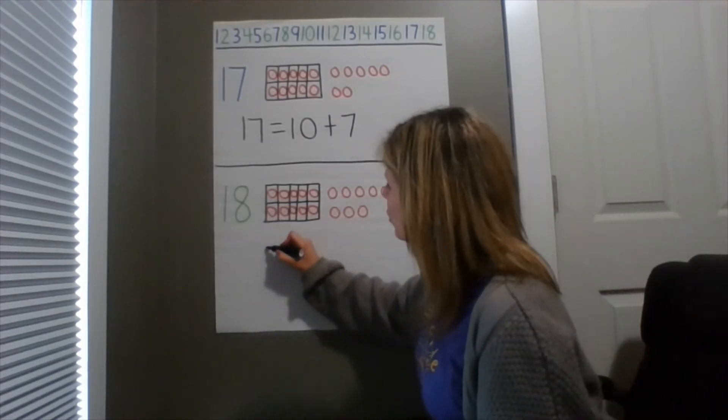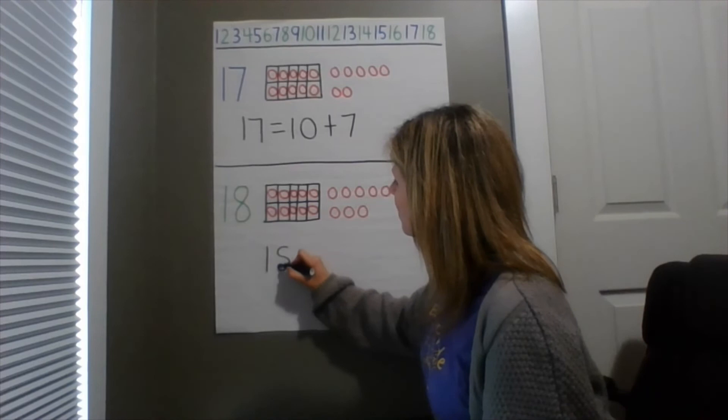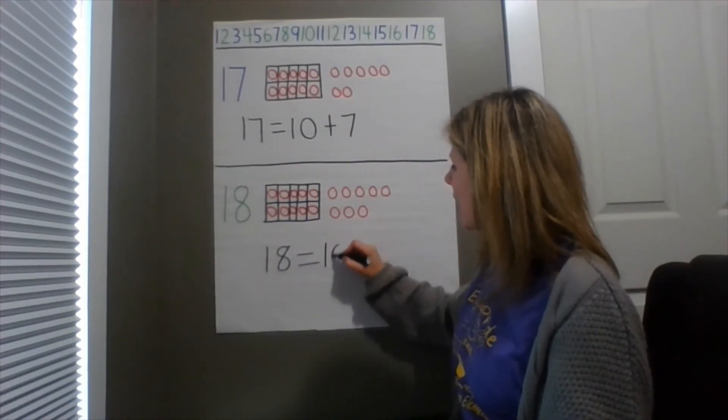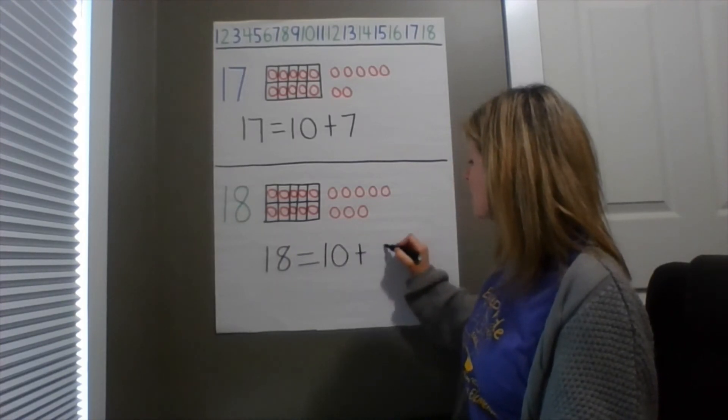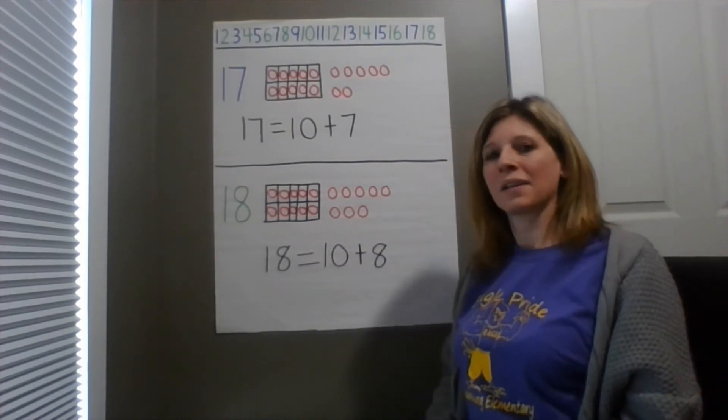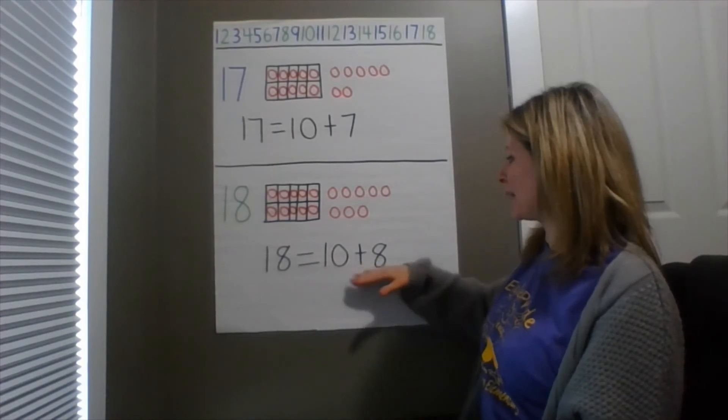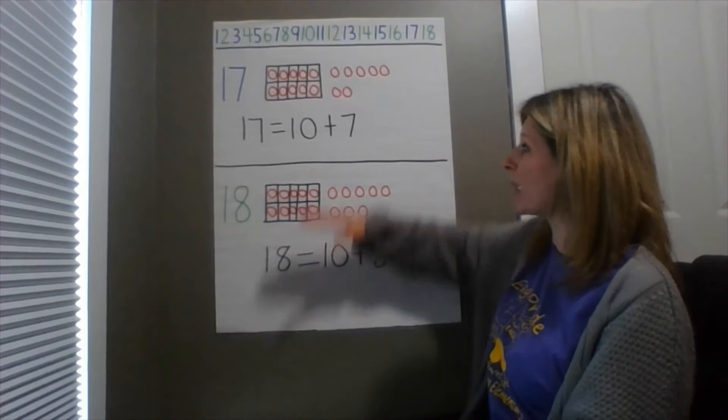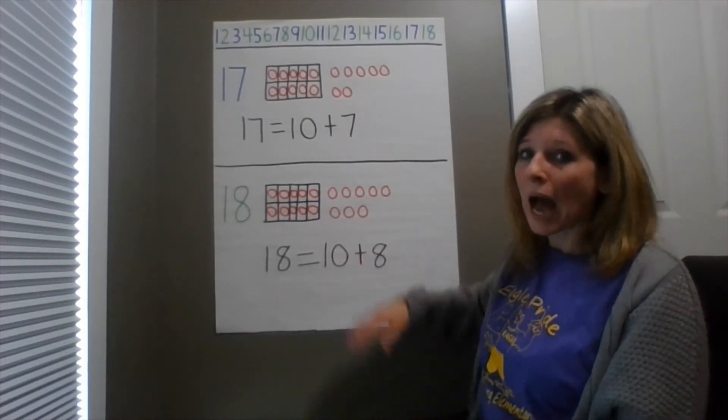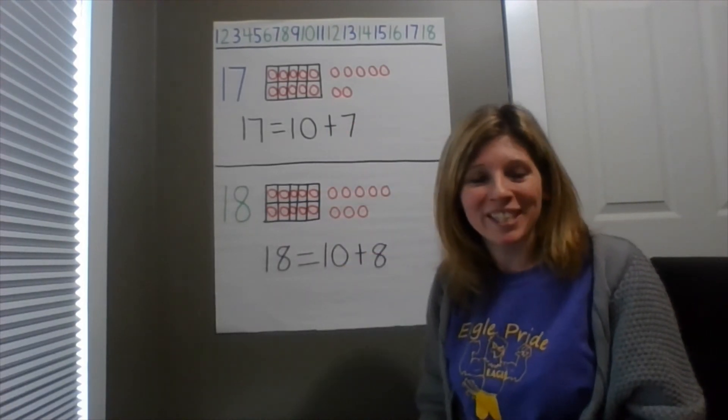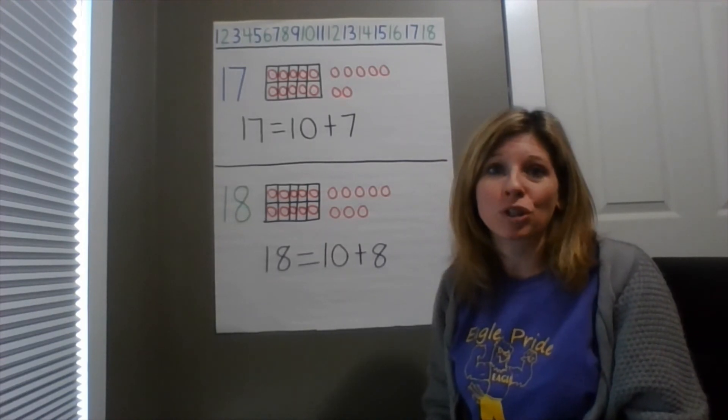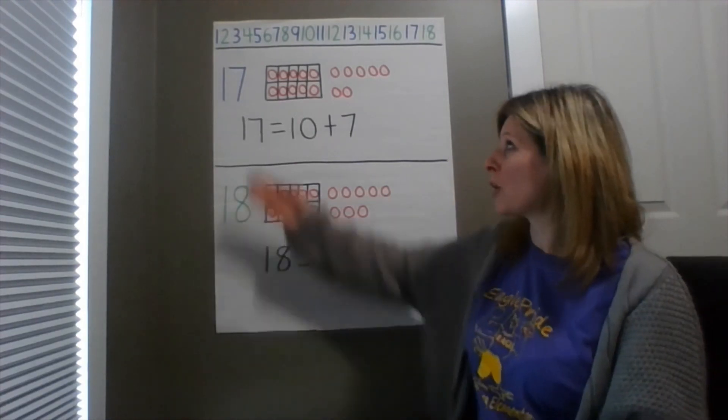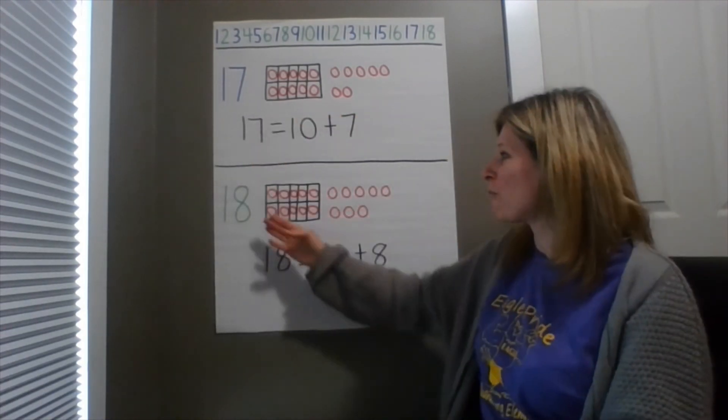Let's make our number sentence. Here we go. Alright. So 18 equals, or is the same as, 10 plus 8. What is 18? 18 is 10 plus 8. Okay. So kindergarteners, make sure you write down both of these number sentences. I want you to take a picture of those number sentences and share them with your teacher so your teacher could see how hard you are working and that now you understand what is 17 and what is 18.